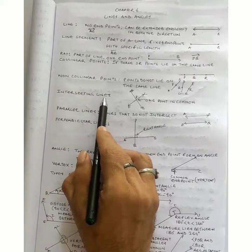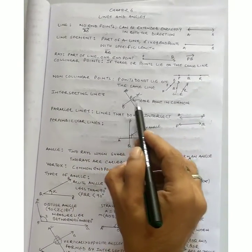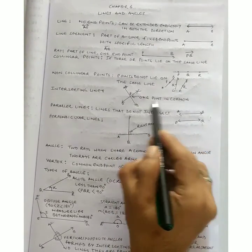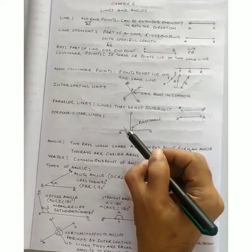Intersecting lines. When two lines are intersected, what does it mean? It means that they have a common point. One point is common. If one point is common, that is known as the point of intersection.